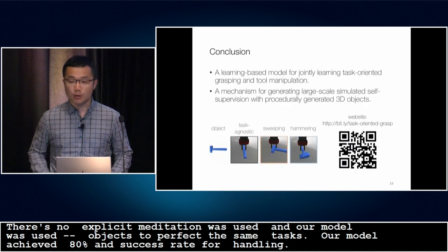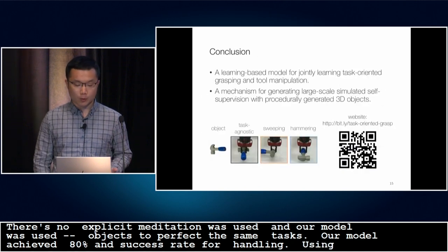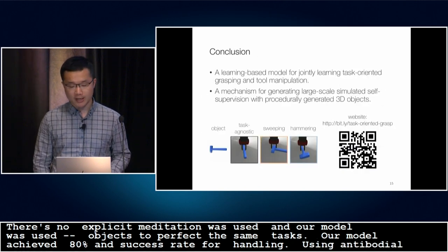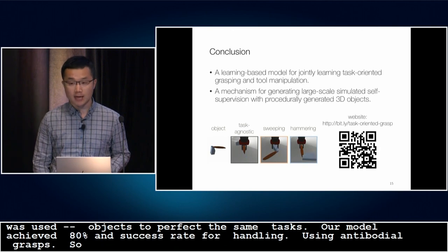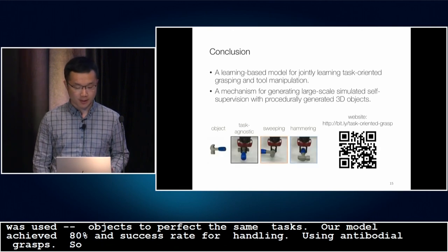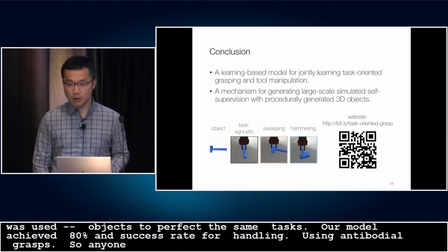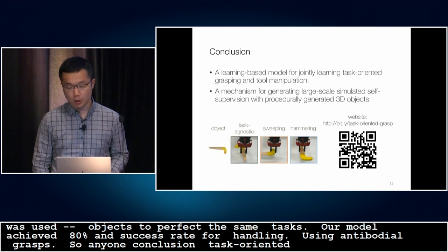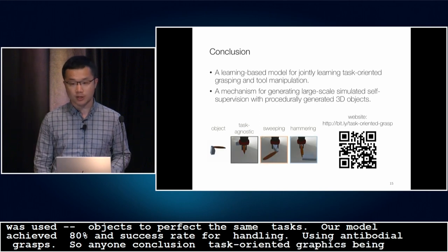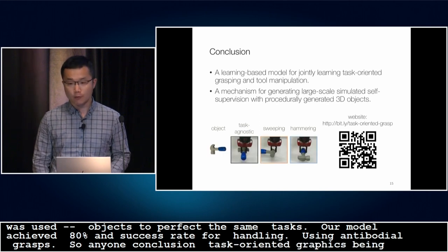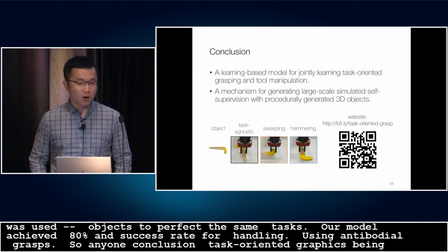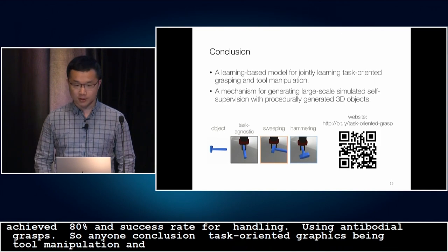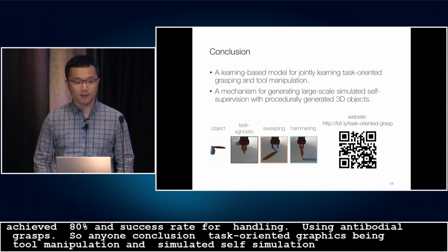In conclusion, we propose a learning-based model for jointly optimizing task-oriented grasping and tool manipulation, and we develop a mechanism for generating large-scale simulated self-supervision with procedural objects. For further details, welcome to our poster and our website. Thank you.